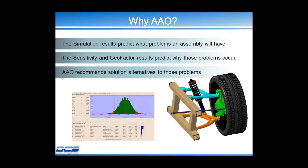When using AAO, we always start with a completed model. That's because we want to first look at the simulation results to see if or where problems might occur. We want to use the sensitivity and geofactor results to determine why these problems might be occurring. Then we use AAO to find solutions to problems predicted by our 3DCS model.